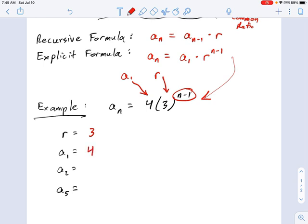Okay, so what's a_2? Well, you can either use what you know from the recursive formula, which is that any term is equal to the term before it times r. And you can say, okay, well, a_1 is 4, that means a_2 is just 4 times 3. So that must be 12.